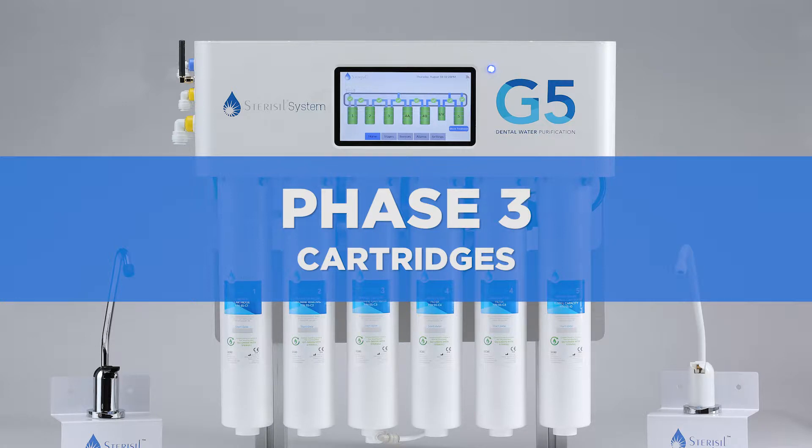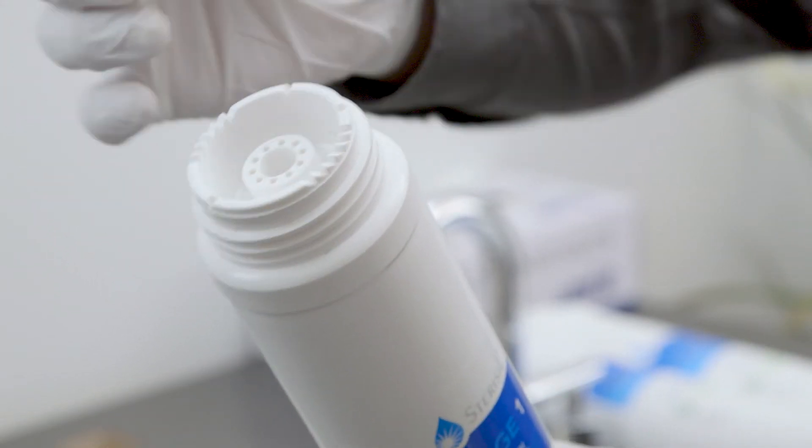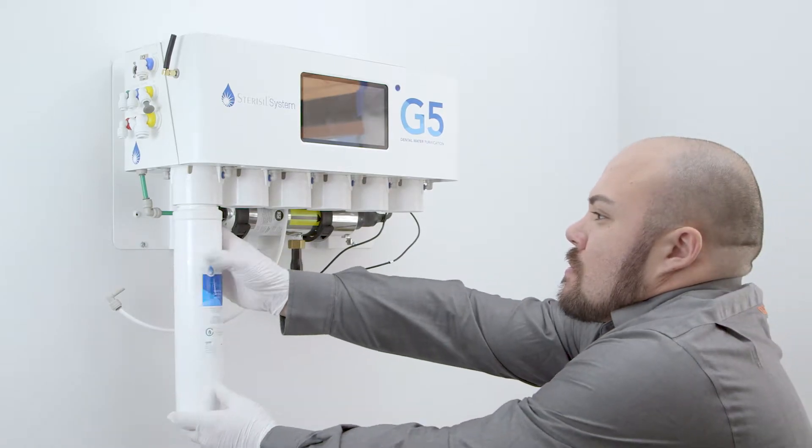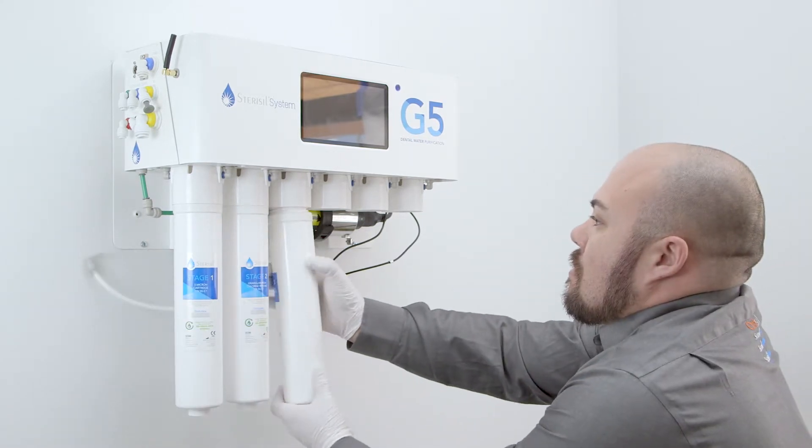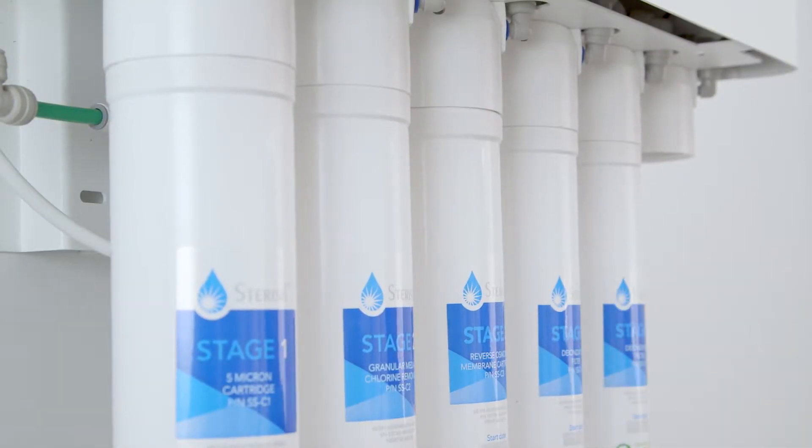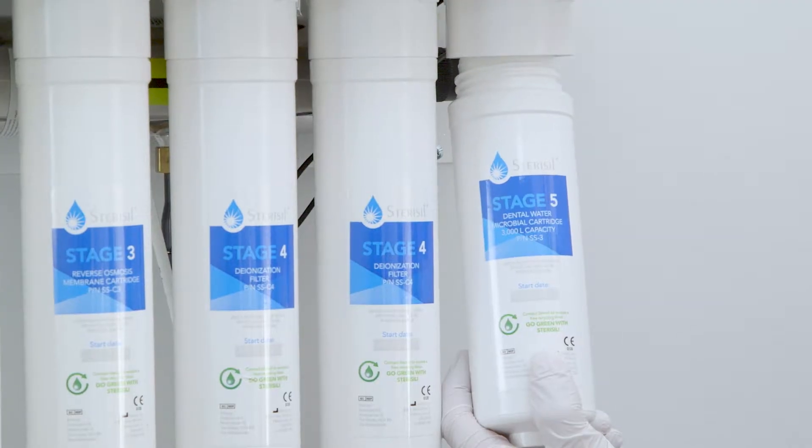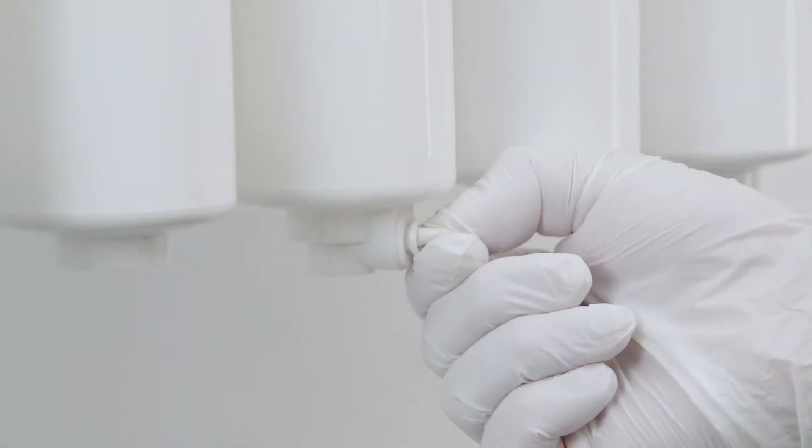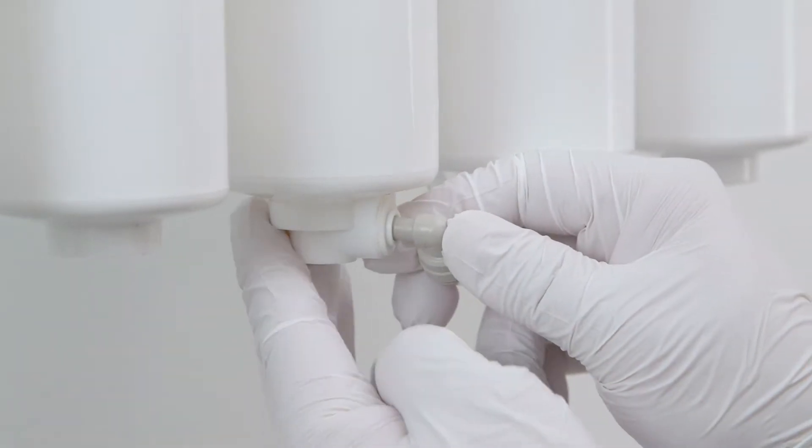Phase 3, cartridges. Before you install each cartridge, remove the yellow cap from the top and write the date with a permanent marker. Start by inserting the cartridges from left to right beginning with stage 1. Please note there are two stage 4 cartridges. They'll both be positioned interchangeably in ports 4 and 5. Please note the size of your stage 5 cartridge will vary depending on its capacity rating. Once all the cartridges are installed, remove the brine plug from the bottom of the stage 3 cartridge and insert the brine tube into the bottom of stage 3.